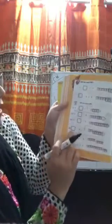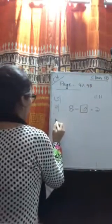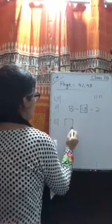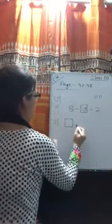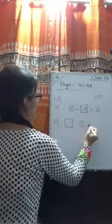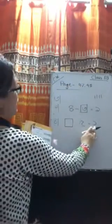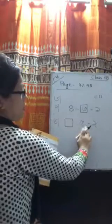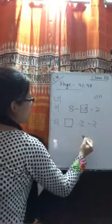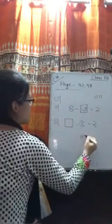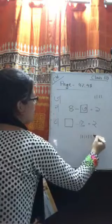આમી એ બાકી ડીટા કોરે ની. એખાણ આમી ચાર નાંબર્ટા કર્વો. ચારે કીય આછે. ચારે આછે. એખાલે ખાળ બાચ. કતો શાથે પાચ?